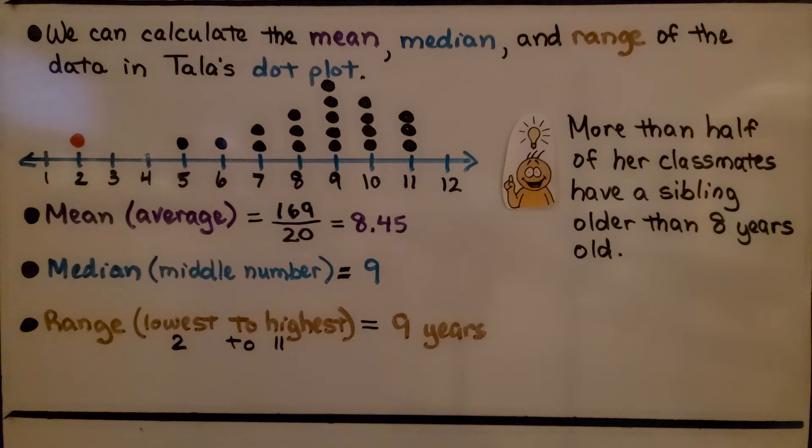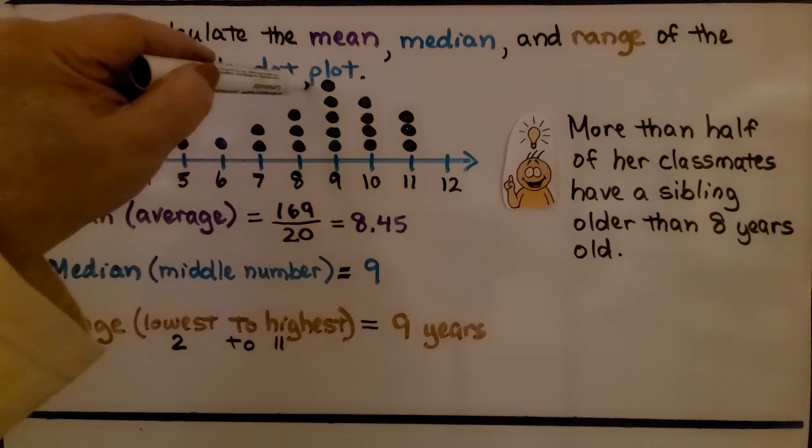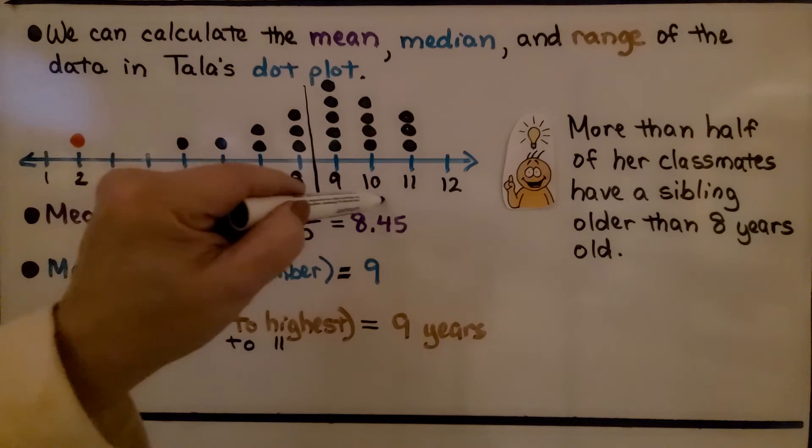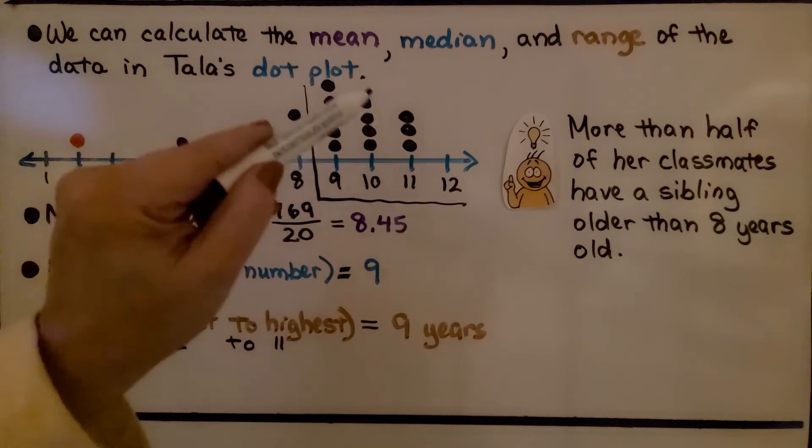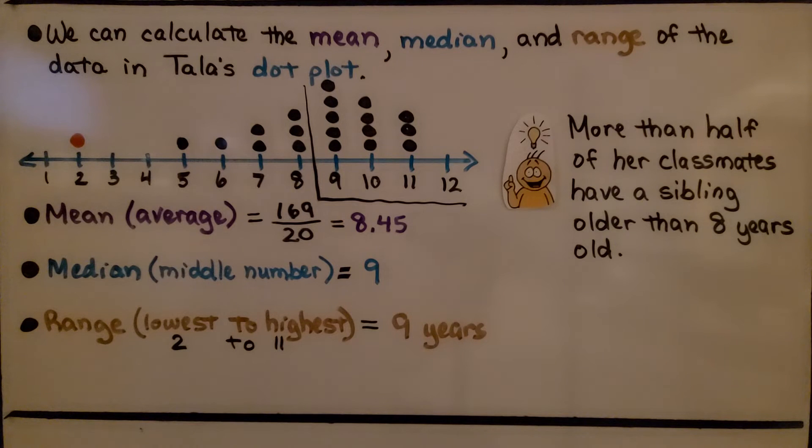Now, more than half of her classmates have a sibling older than 8 years old. So here's 8 years old. If we were to split this here, this is more than half of her classmates. Their siblings are older than 8 years old.